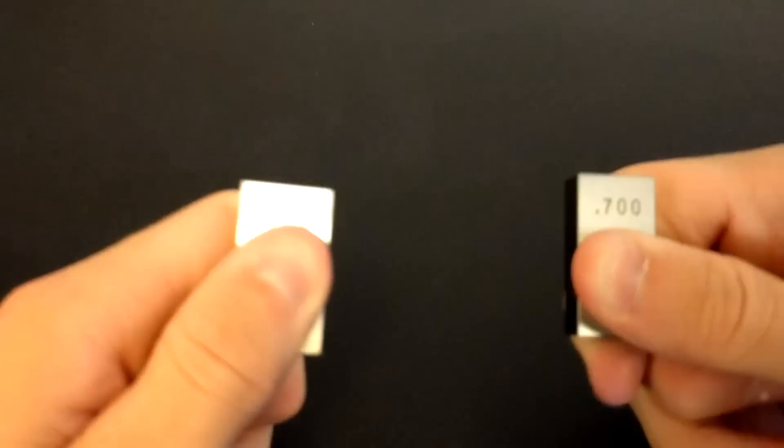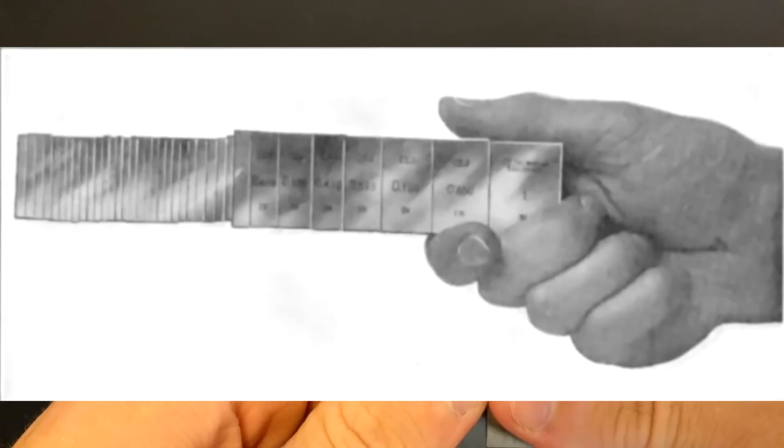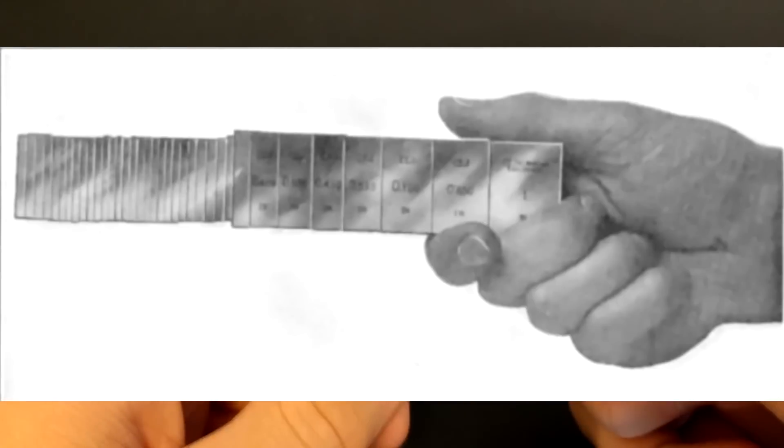Properly wrung gauge blocks can hold 75 foot-pounds of force before coming apart. And this actually is useful so machinists can combine gauge blocks of different lengths to essentially make more gauge blocks of many more lengths than they already have.